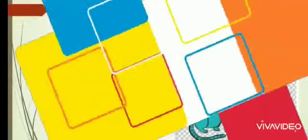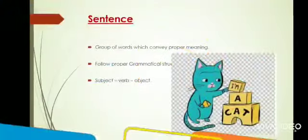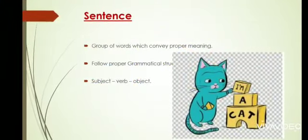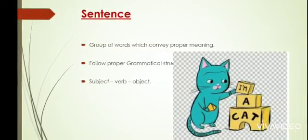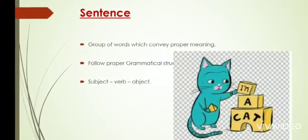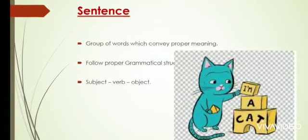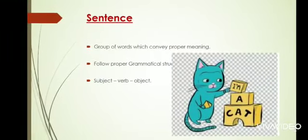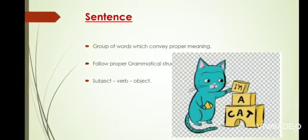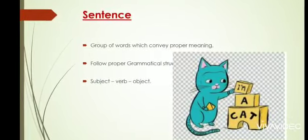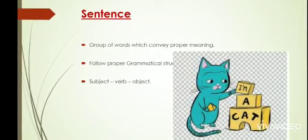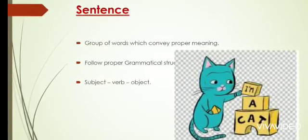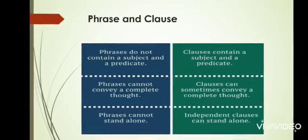We have one rule for making a sentence: we place the subject at the start, then the verb, then the object. The first letter will always be a capital, and then we put a full stop. There is also some confusion between a clause and a sentence because their definitions can seem similar.